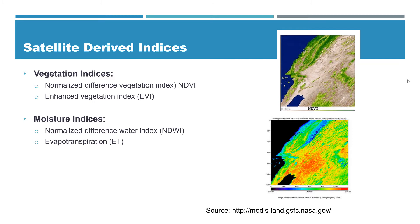Other products from the MODIS instrument include the Normalized Difference Water Index (NDWI), which is a water measurement index. Another parameter is evapotranspiration — we can get a MODIS-based ET product. We can also get land surface temperature, which is not necessarily directly useful for water resources, but it is a parameter we get from MODIS.